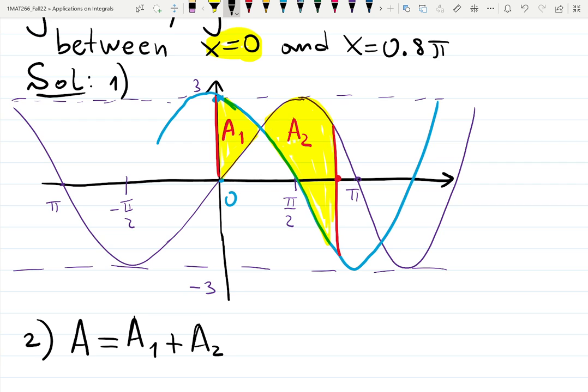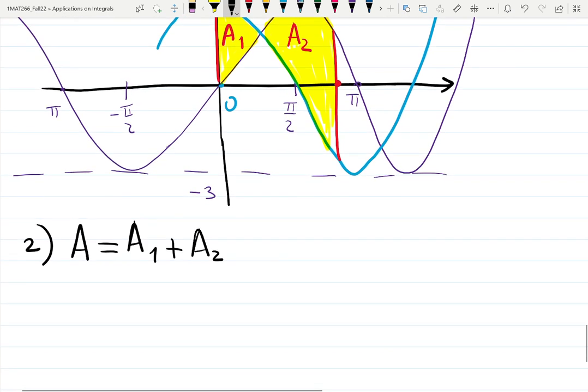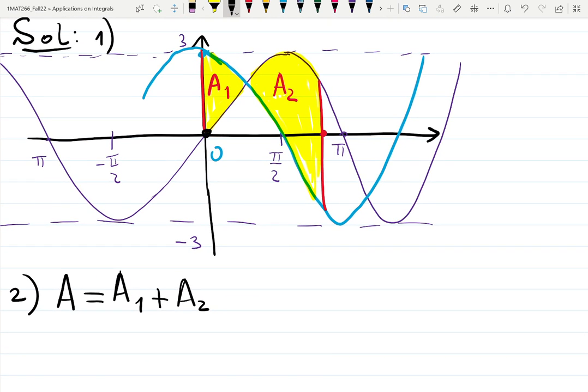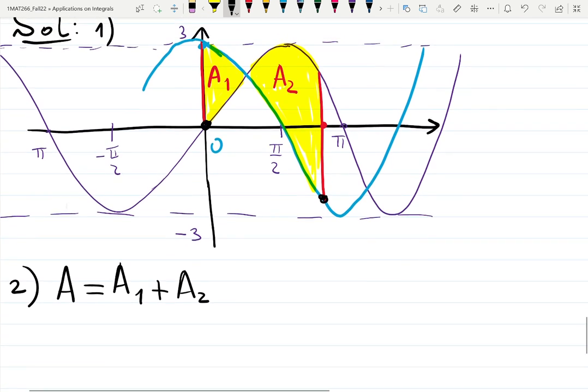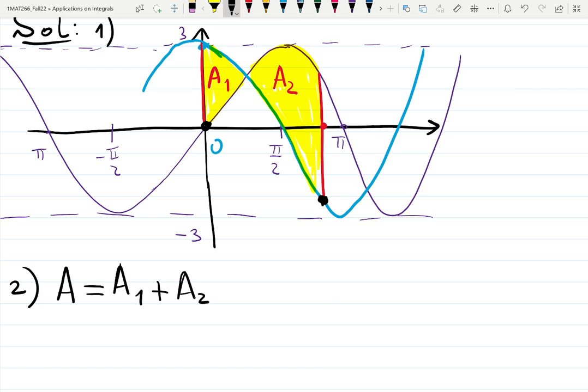We need to find points of intersections. The first point and the last point are pretty obvious. What is the first point? 0, 0. The last point, we will have the input of 0.8 pi. The only point of intersection missing is this one. How to find this point? Set the functions equal to each other, because this is where sine and cosine meet.